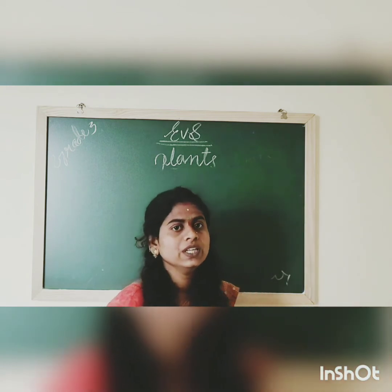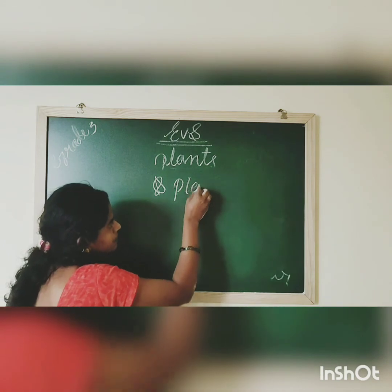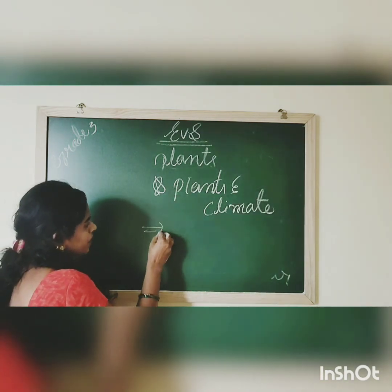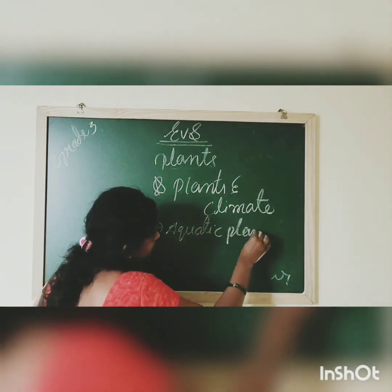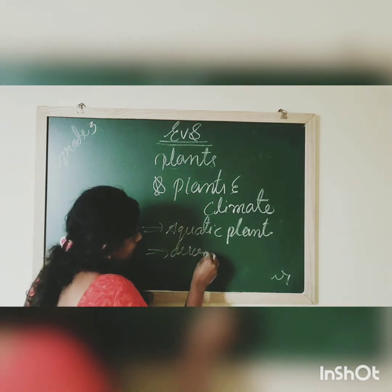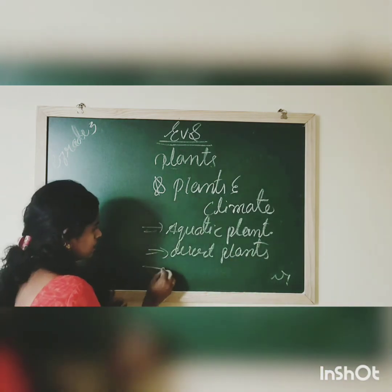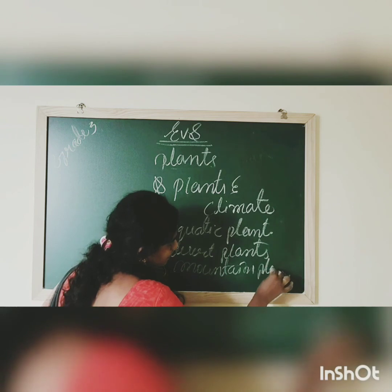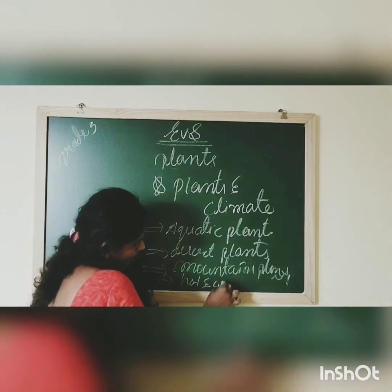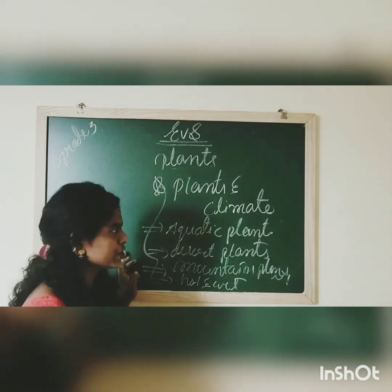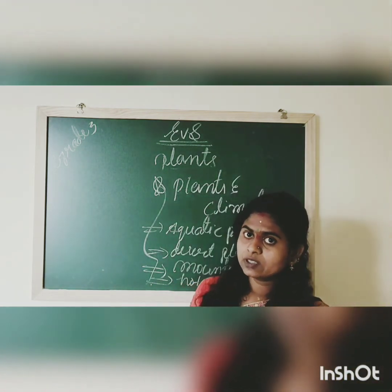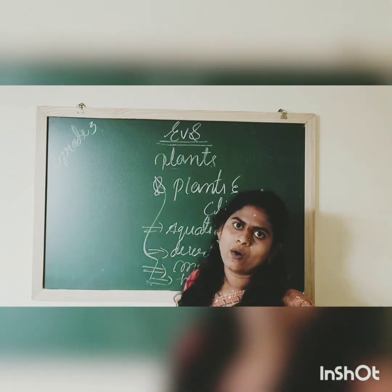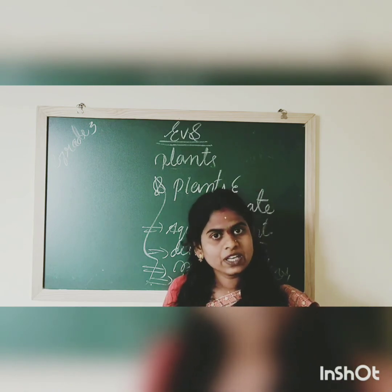In today's session we recalled the kinds of plants, and we learned about plants and climate. We discussed aquatic plants, desert plants, mountain plants, and hot and wet weather plants. I hope you understood today's session very well. Please go through this video once or twice to understand all the topics. Thanks for watching the class, dear children. I will come with the next class with one more topic.